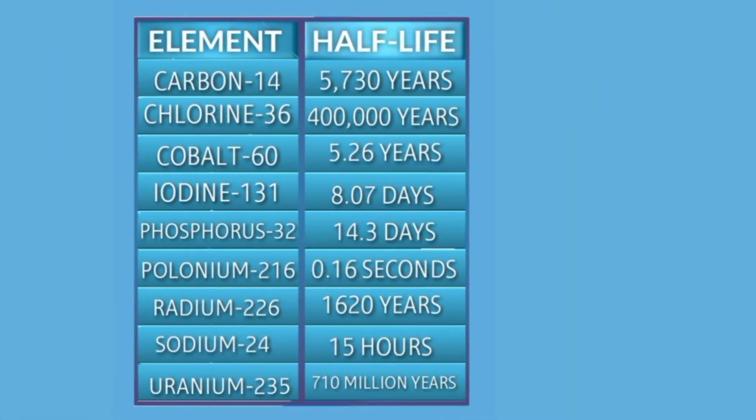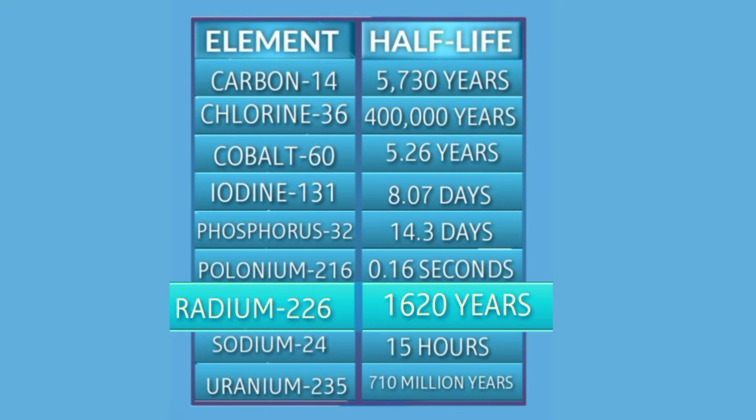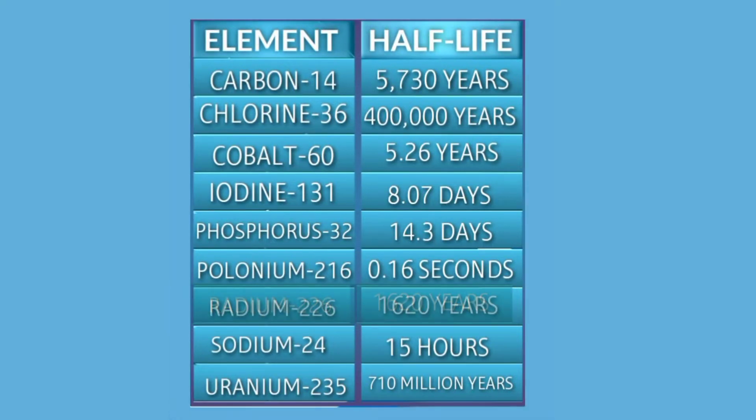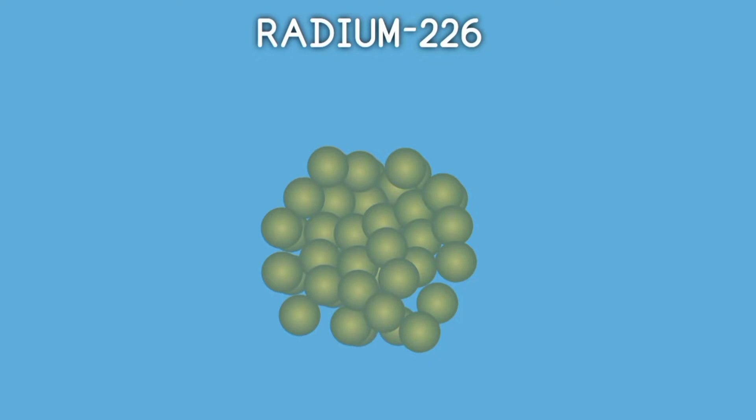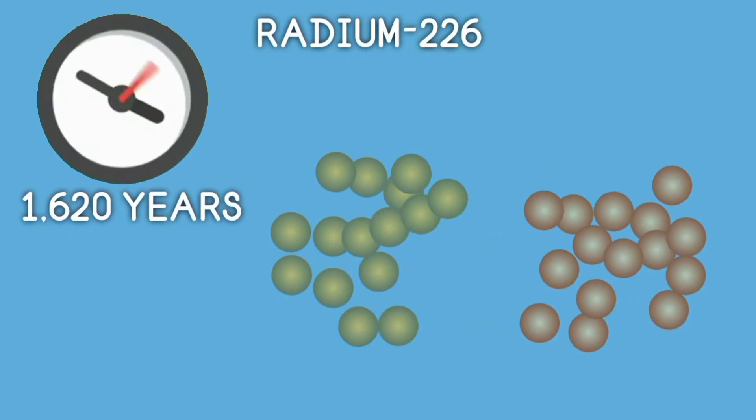Another example, radium-226, has a half-life of 1,620 years. This means that half of the sample of radium-226 will be converted to other elements by the end of 1,620 years.